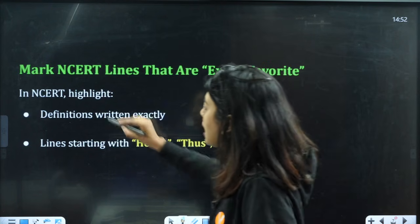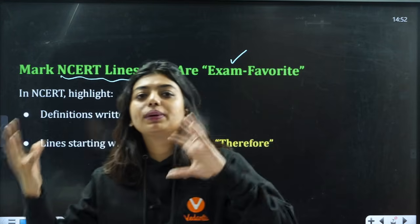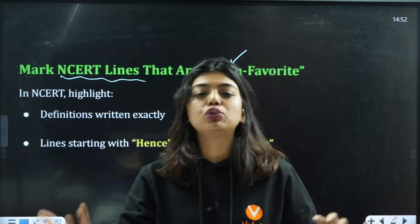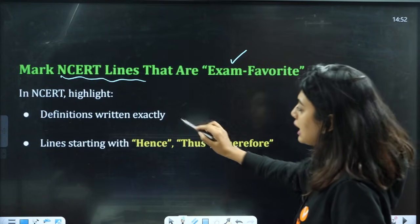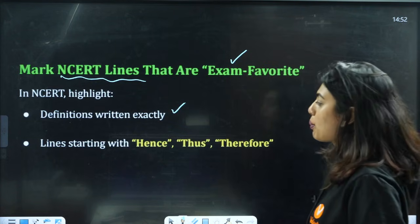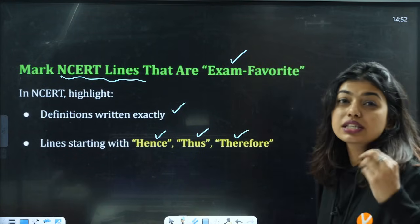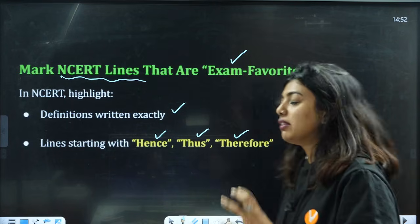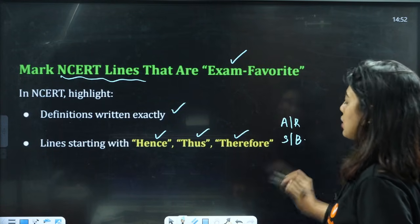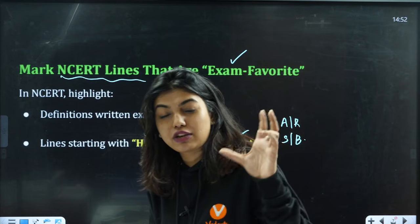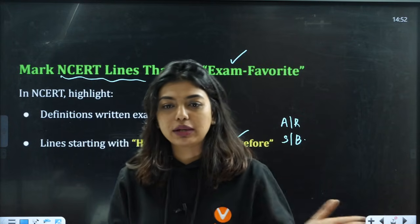The third most important thing is: mark NCERT lines that are exam favourites — that is, lines which can turn out to be an assertion-reason or a statement-based question. So in NCERT, highlight definitions exactly as written — copy paste the definition. Then highlight lines that start with hence, thus, therefore, because, always. You highlight those words because this is a starting point of an assertion-reason or statement-based question. You can use a completely different colour for it or stick to your pink, blue, any of the systems.